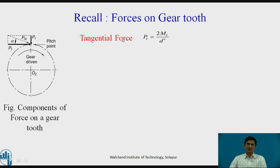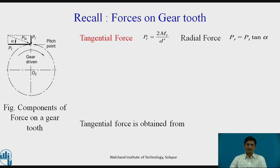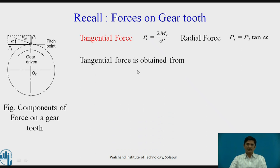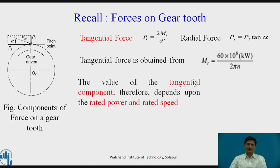Pt is the force which is responsible for driving the gear. The tangential force Pt is given as 2mt upon d', where d' is the pitch circle diameter. The radial force is given by Pr equals Pt tan alpha. Tangential force is obtained from the equation of torque: 60 into 10 to the power 6 kW upon 2 pi n. The value of the tangential component therefore depends upon the rated power kW and the rated speed n.